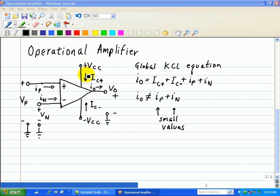In addition, we have the currents and voltages due to the power supplies, one at the plus and one at the minus terminal. Here we have IC plus denoting the input current due to the VCC, plus VCC, and one due to minus VCC as IC minus. When we do a global KCL equation associated with the op-amp, the outgoing current is equal to the incoming currents. We have IO equals IC plus, plus IC minus, plus IP, plus IN.